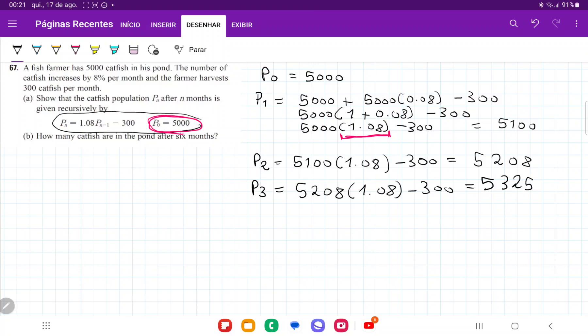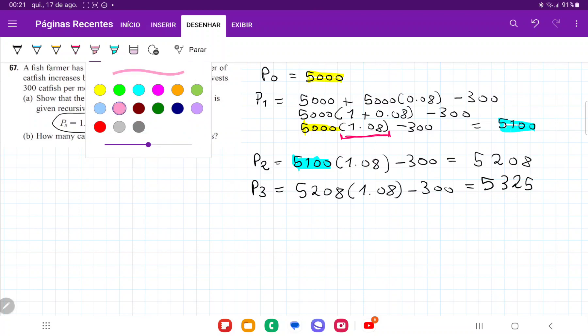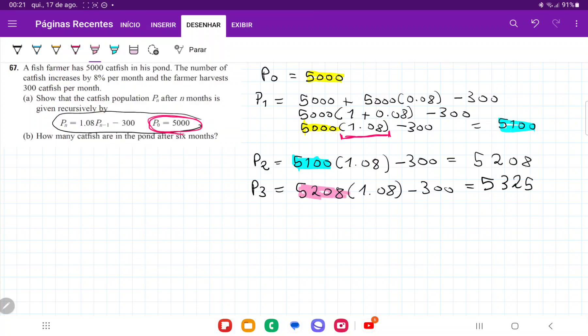So we can clearly see here, what is the pattern? If we look at the pattern, P1 is going to be 5,000 and that 5,000 comes from the previous one times 1.08 minus 300. And then, P2 is going to be 5,100 and this 5,100, it comes from the previous amount, times 1.08 minus 300. And then P3 is going to be 5,208, which comes from the previous 5,208, all this times 1.08 minus 300.